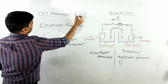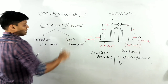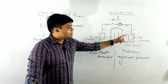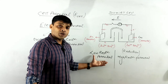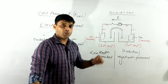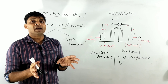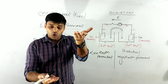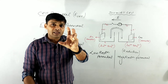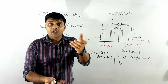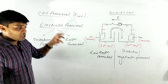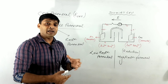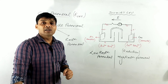I hope you have understood the meaning of electrode potential very clearly. Electrode potential is just the tendency of an electrode to lose or gain electrons, with two types: oxidation potential and reduction potential — now referred to as low reduction potential and high reduction potential. Now, once we understand electrode potential, let's move on to our next concept: cell potential.